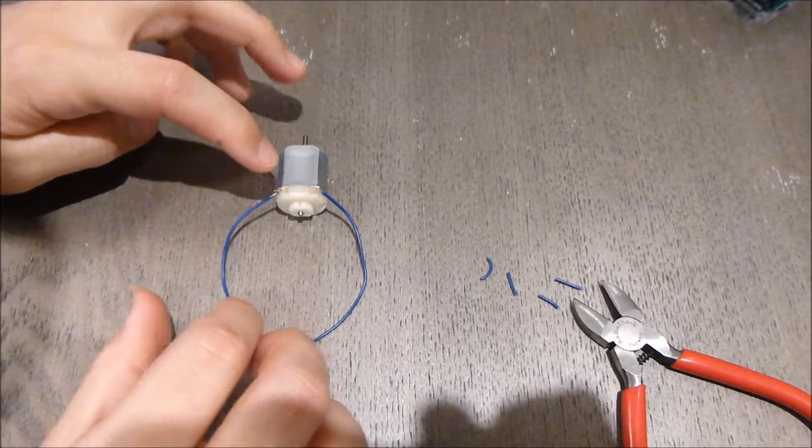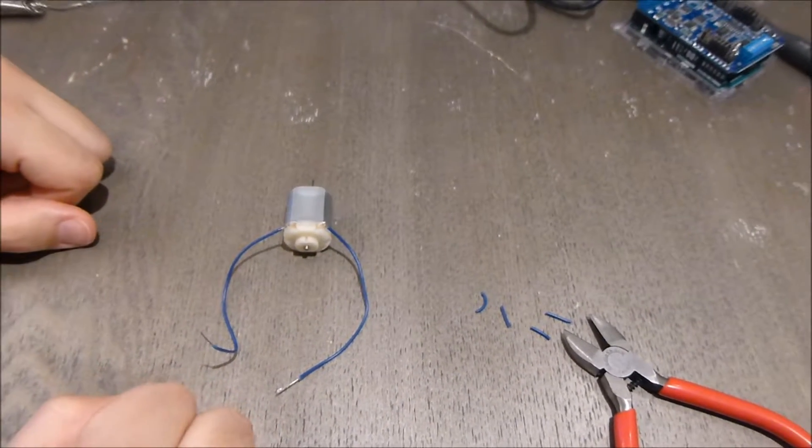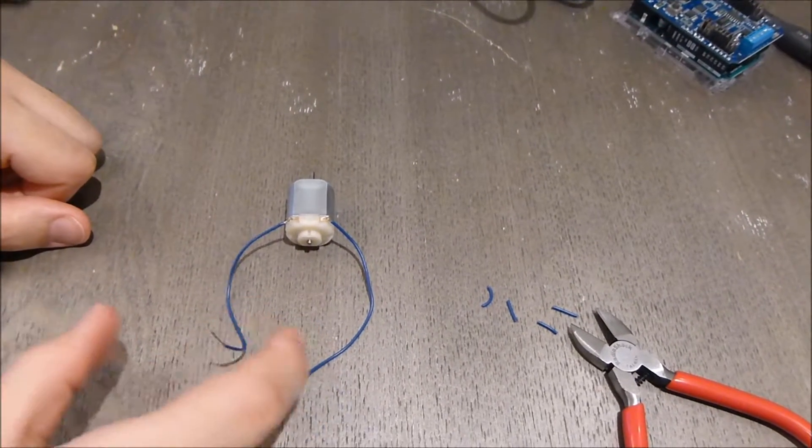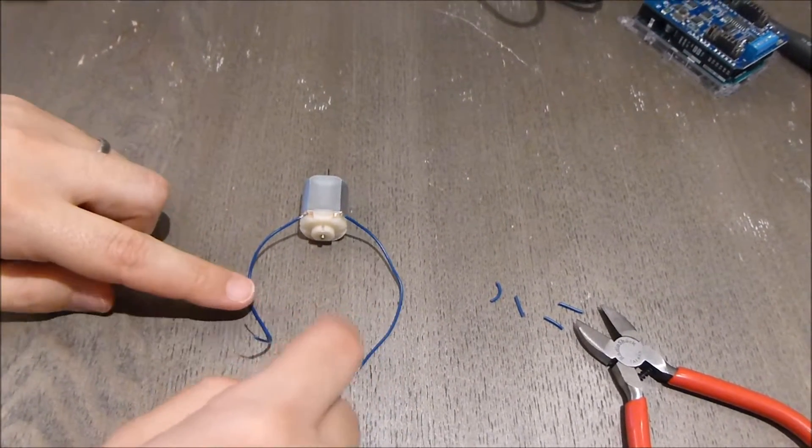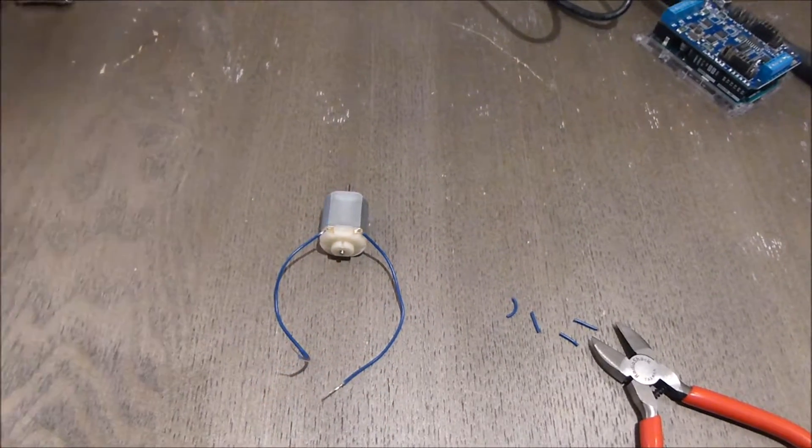You're going to want to solder it on. You wouldn't want to leave it like this, even though this would probably work for a little while, because Smarda is going to be carried around and used with your animals. If it gets shaken too much, these could come disconnected. So we want to solder these on so they stay permanently and make a good connection with the motor.